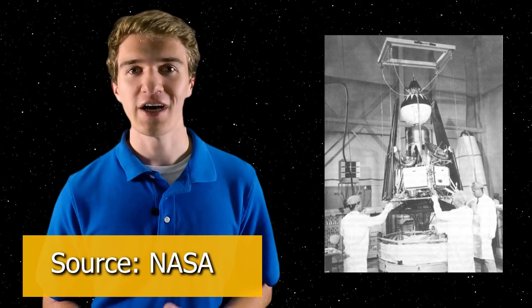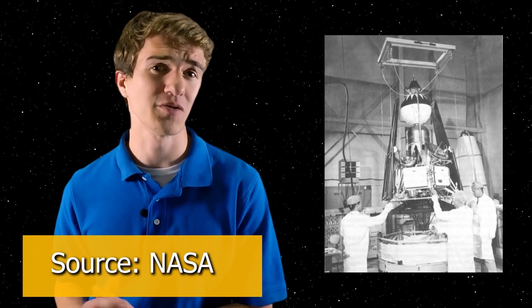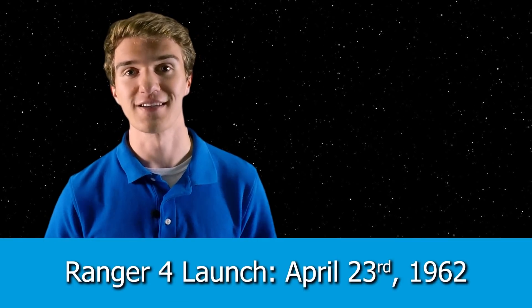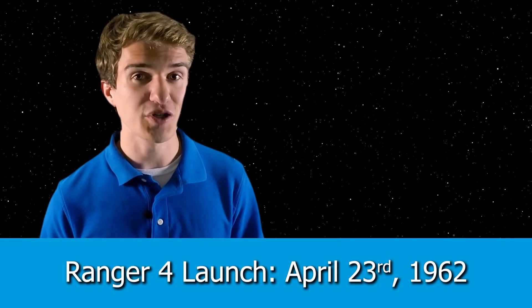Following Ranger 3, a few months later, was Ranger 4. And as you can probably predict, it was the same design as Ranger 3, just trying to fix a couple of the issues they ran into before, had the exact same rocket, the Atlas Agena B, and it was launching on April 23rd of 1962. But this time, the launch worked. All the maneuvers went according to plan. But there was an issue.